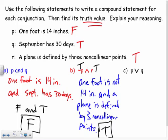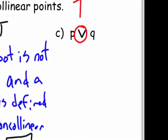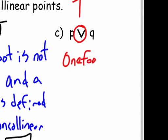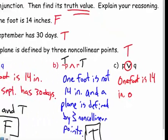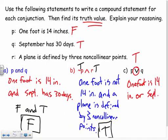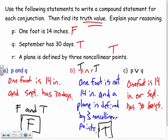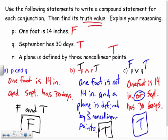Now let's look at a disjunction — p or q. We write: 'one foot is 14 inches OR September has 30 days.' P is false and q is true. For 'or,' as long as one thing is true the whole thing is true, so false or true gives us true. September does have 30 days, so the whole statement is true. That's the key difference between 'and' and 'or.'